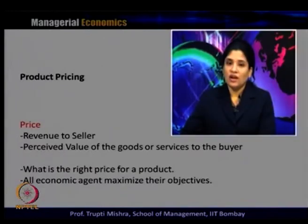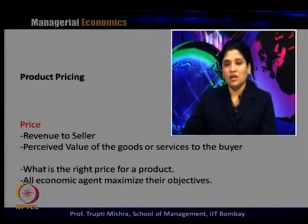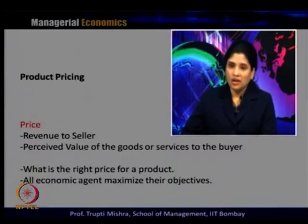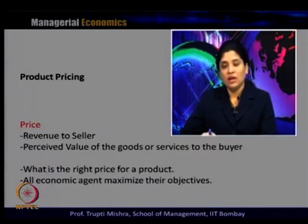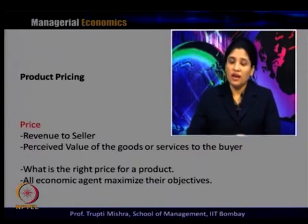The question here is: what is the right price for a product? Since price leads to different meaning for different economic agents — it is revenue to the seller and perceived value to the buyer — the right price of the product is one where all economic agents maximize their objectives. For the buyer, it is the price where he maximizes his utility or consumption; for the seller, it is maximizing sales revenue; for the supplier, it is the maximization of output; and for the firm, it is the maximization of profit. The right price is one which maximizes the end objective of all the economic agents associated with the product.